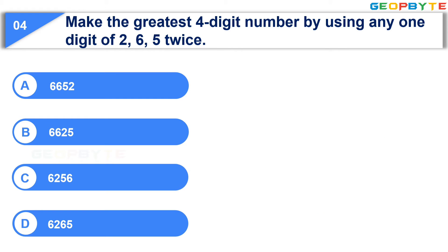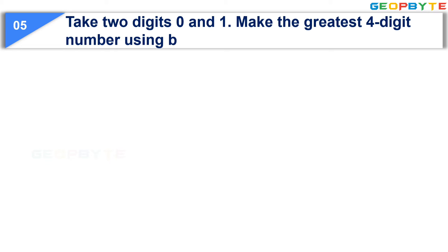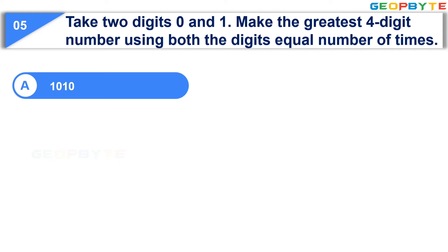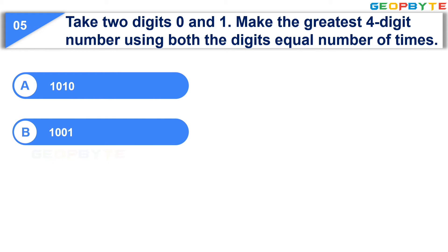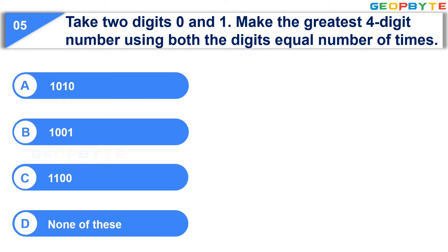Your time is up and the correct answer is Option A: 6,652. The fifth question is: Take two digits 0 and 1. Make the greatest 4-digit number using both digits an equal number of times — Option A: 1010, Option B: 1001, Option C: 1100, Option D: None of these. Your time starts now.